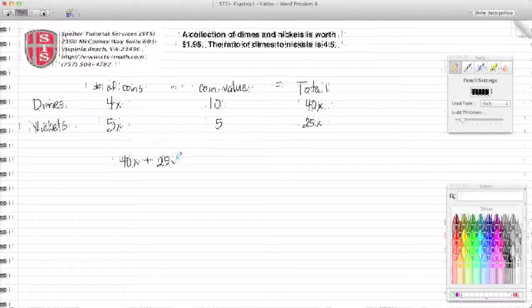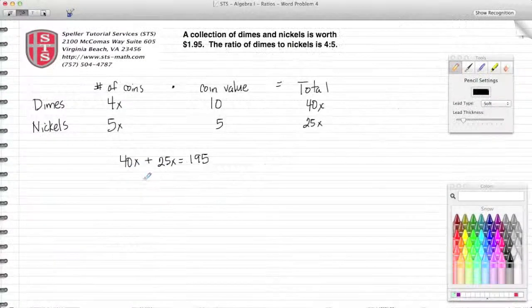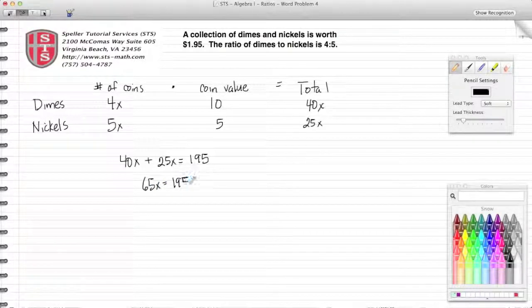All right, we also know that the dime total plus the nickel total should add up to one dollar and 95 cents. Again, we're just going to use the number of pennies so that we stay away from the decimal points. So that leaves us with 40x plus 25x is 65x equals 195.